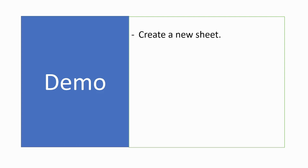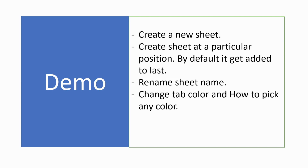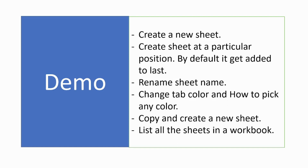Hi everyone. In this video we are going to learn how to manage Excel sheets using openpyxl. First, we are going to create a new sheet, then learn how to create a new sheet at a particular position — by default it gets added to the last. Third, we are going to rename the sheet name. Fourth, we are going to change the tab color and learn how to pick any color as per our wish. Fifth, we are going to copy an existing sheet and create a new one. And finally, we are going to list all the Excel sheets available in a workbook.